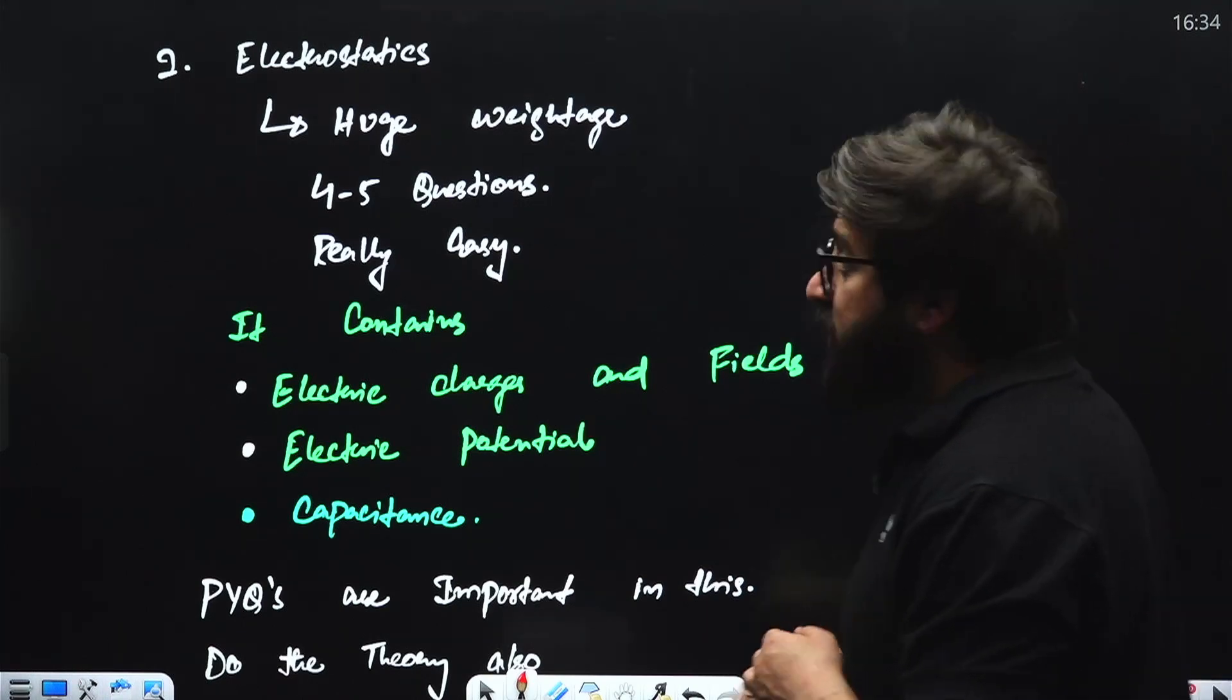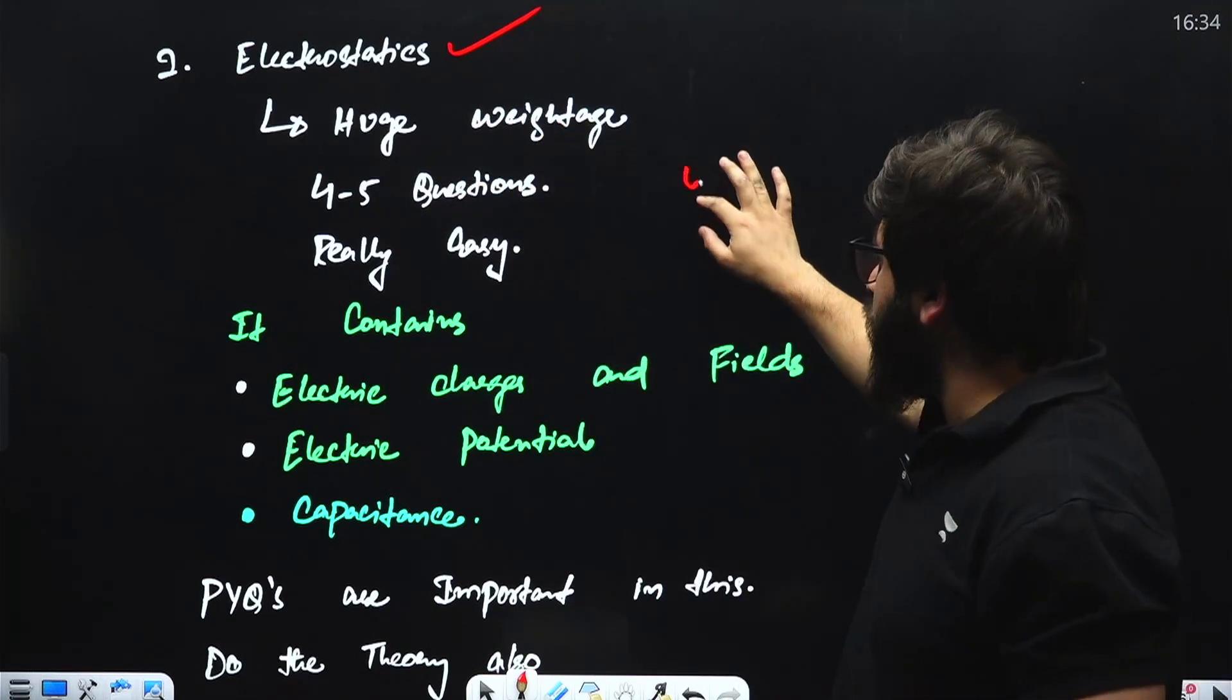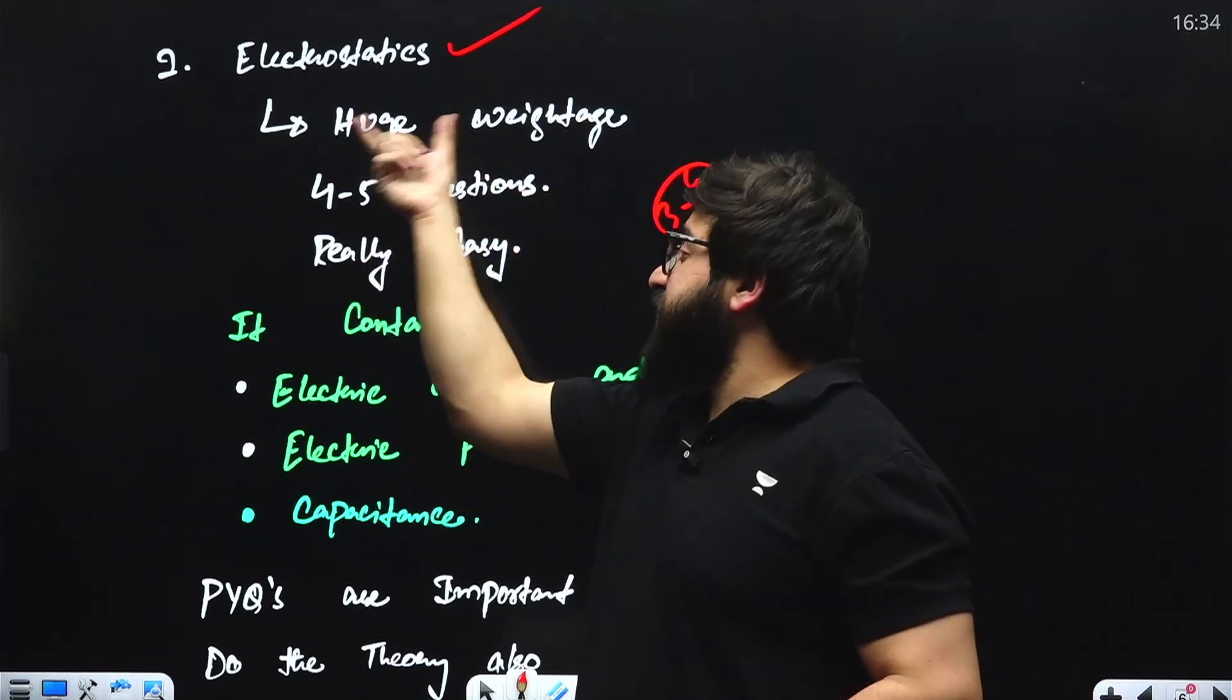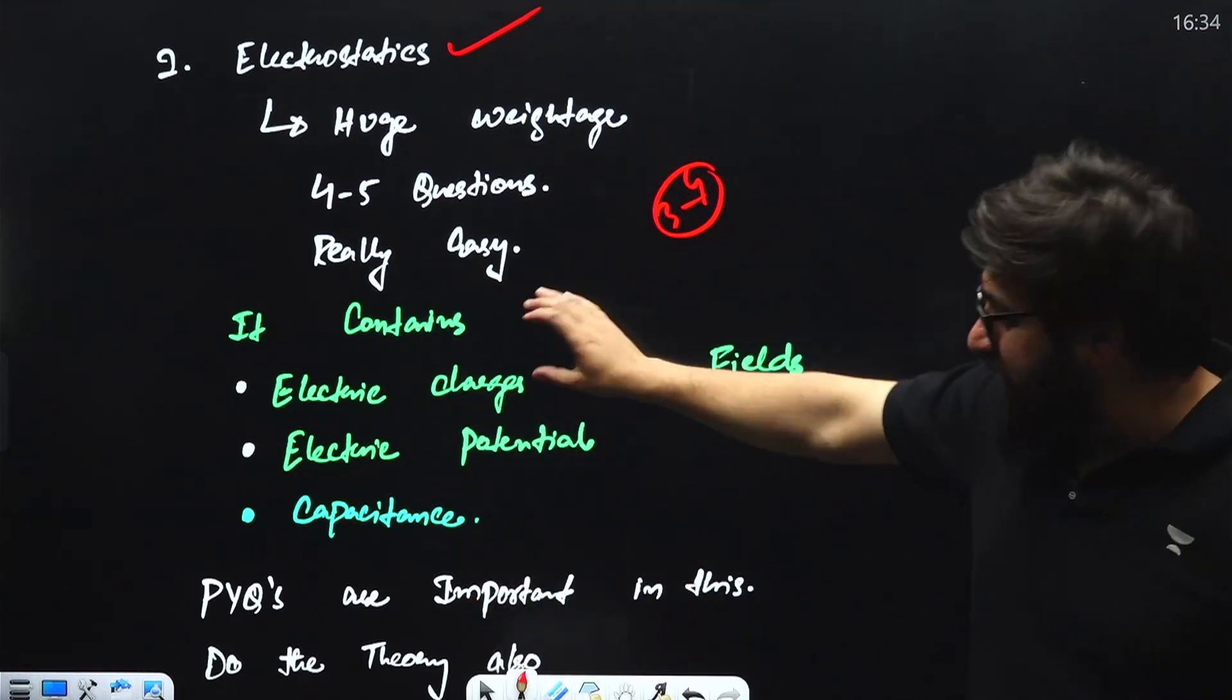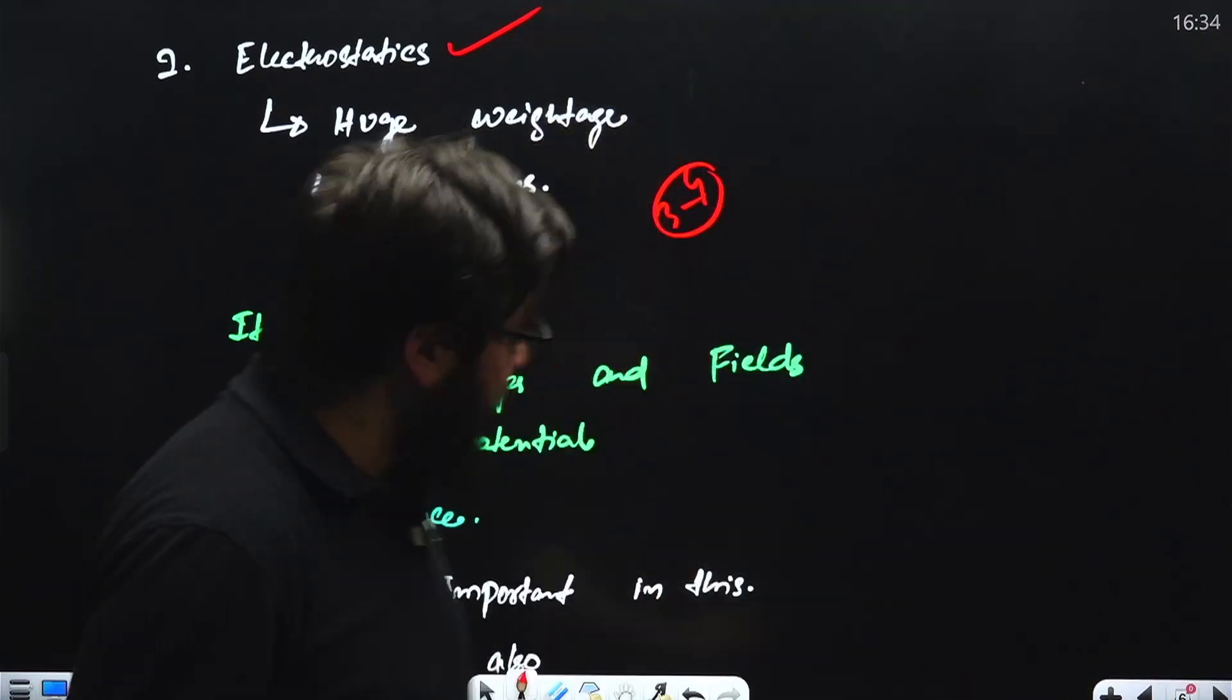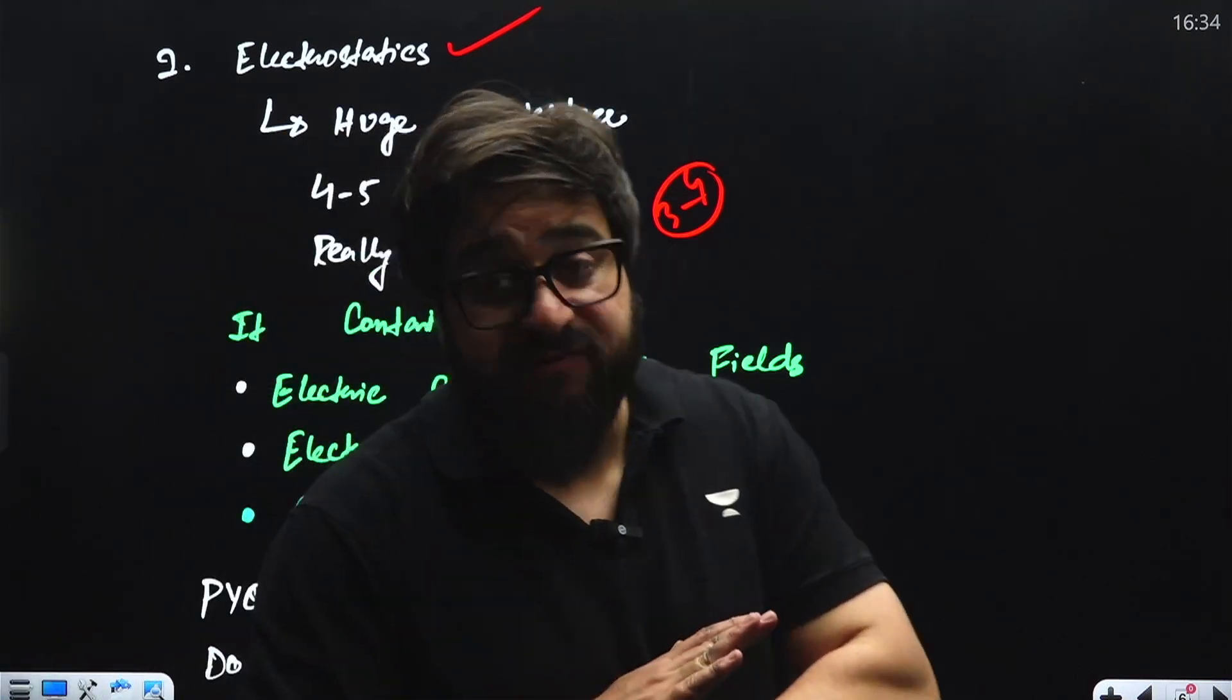Next chapter, my personal favorite, is Electrostatics. You have to go with the electrostatics chapter. This year also, three to four questions were asked from this, so you can expect four to five questions from this chapter. Huge weightage and it is extremely easy. It further contains subtopics: electric charges and fields, electric potential or capacitance. In this case also, the PYQs are important from this portion and theory part must be done very properly.